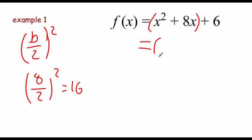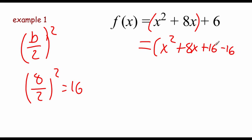Inside of the parentheses we copy down x squared plus 8x, and we're going to add this 16 to get our nice factoring. But we can't just add something without throwing the balance off, so at the same time we also subtract 16 — this is the whole adding zero thing. If we add something and then subtract it right away, we haven't changed the balance of the equation. Then we close off the parentheses and the plus 6 is still hanging on the end.